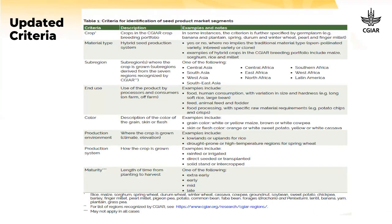Working with the market intelligence team — especially Work Package 1 — the criteria to identify and name a market segment have been updated. This slide provides the details of the new approach. There are still eight components to the naming of a unique market segment, with more detail and examples provided within each. If you want this level of detail, please reach out to Jason Donovan and ask for Market Intelligence Brief Number 1, which is a short document giving a much more thorough description of how to identify market segments.